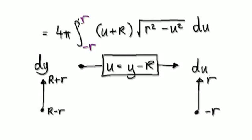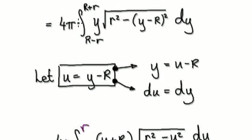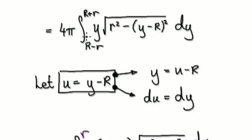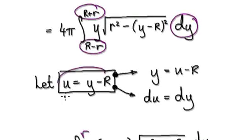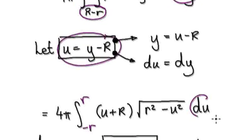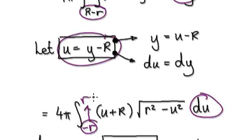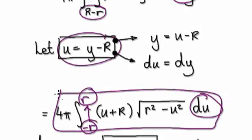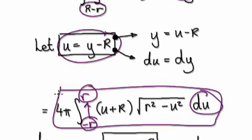So earlier we were integrating from capital R minus r to capital R plus r in terms of y. But because we made this substitution, we are now living in the du world. The equivalent is integrating from negative r to positive r. So we are now currently at this stage.